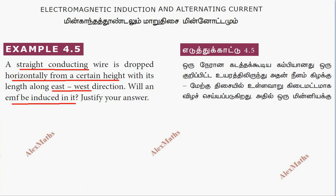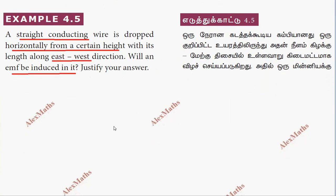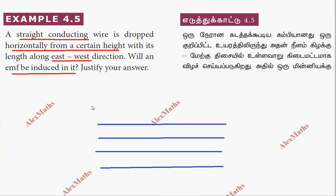If you look at the horizontal component of magnetic field, it is in the north-south direction. But, in the straight conducting wire, it is in the east-west direction.